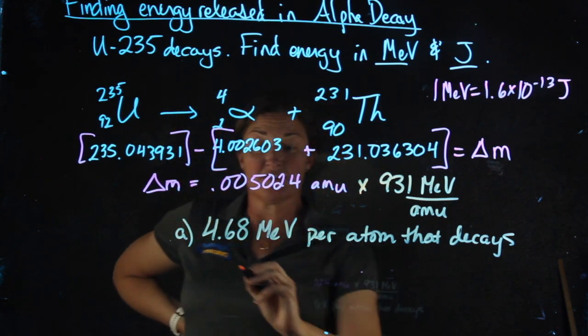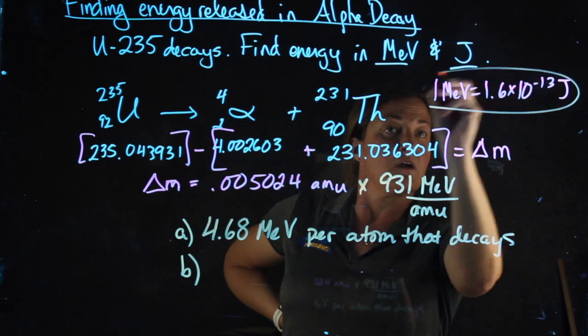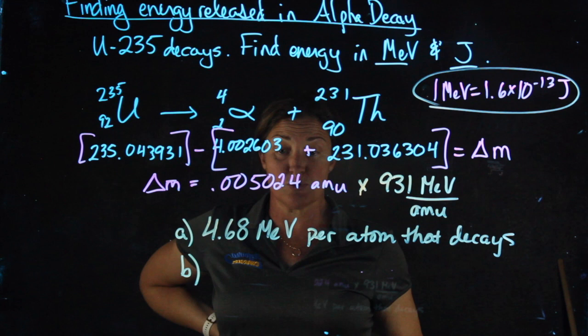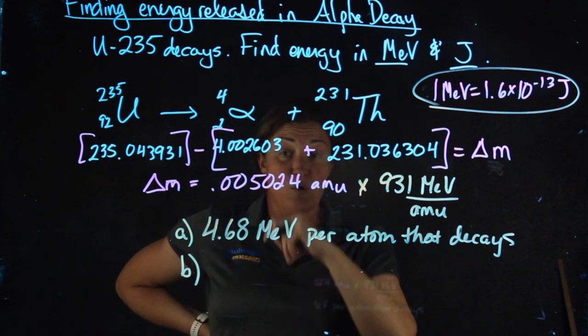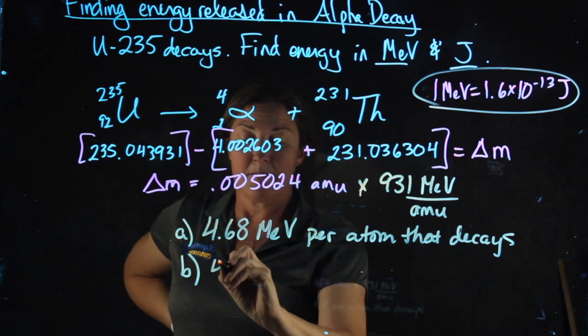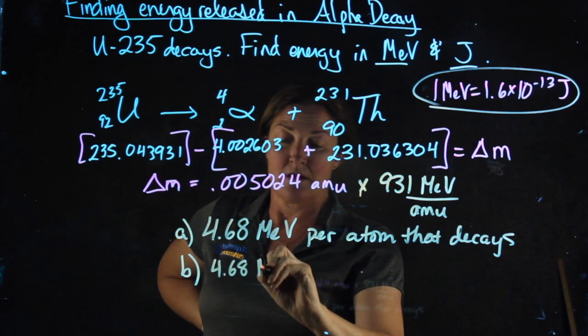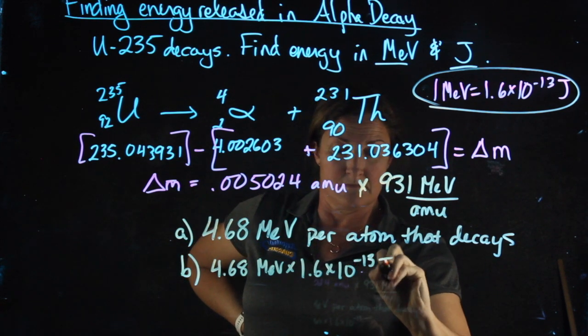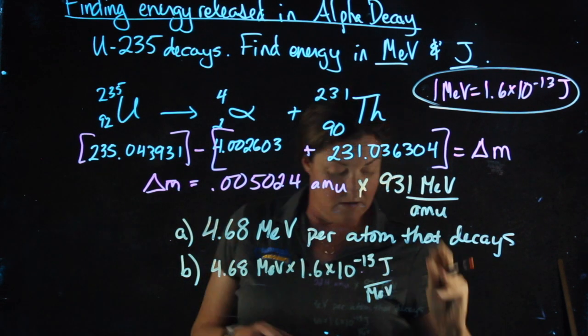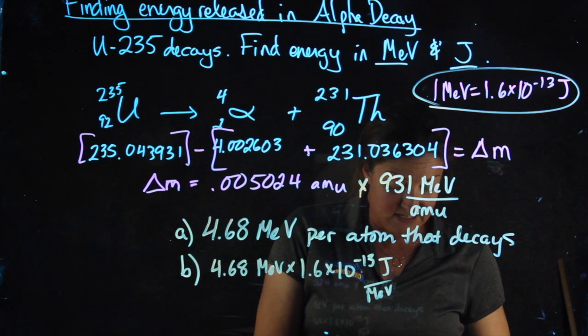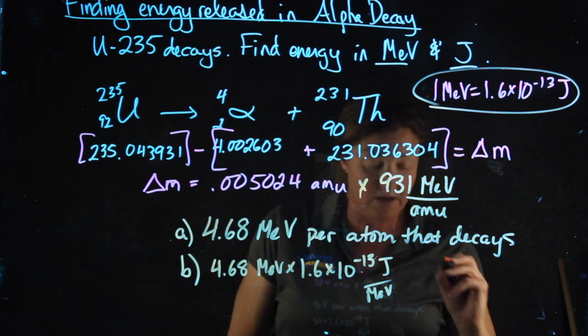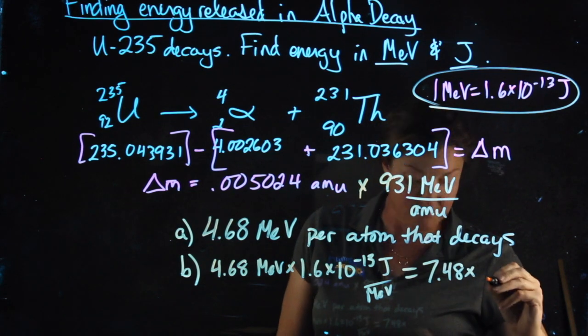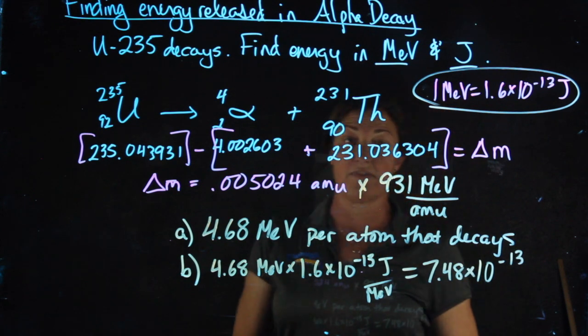For B, I need to also get it in joules. 1 megaelectron volt is 1.6 times 10 to the negative 13th joules. If you want, you can set it up as a proportion to see it more easily. I'm going to end up multiplying. So times 1.6 times 10 to the negative 13th yields 7.48 times 10 to the negative 13th.